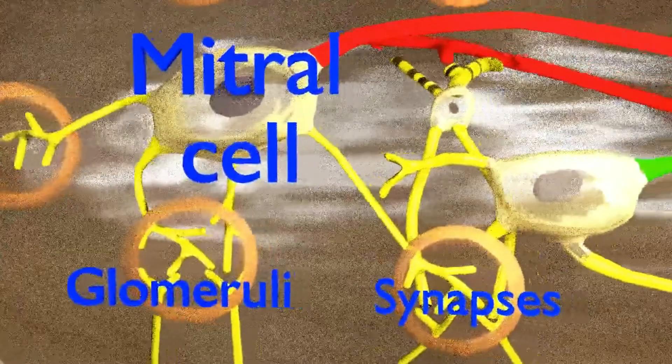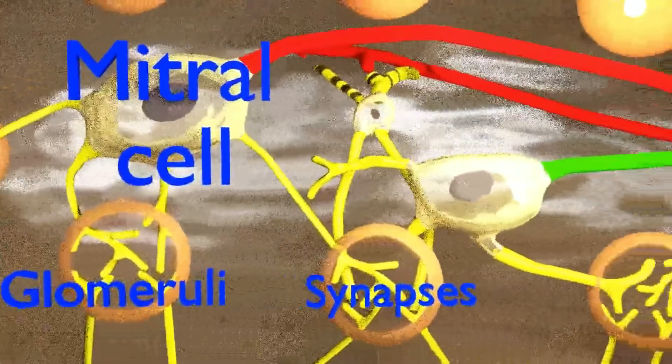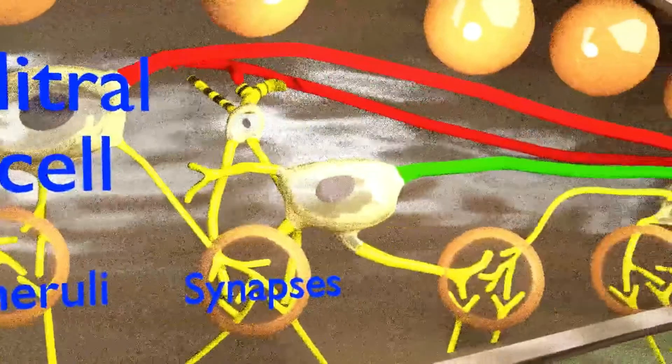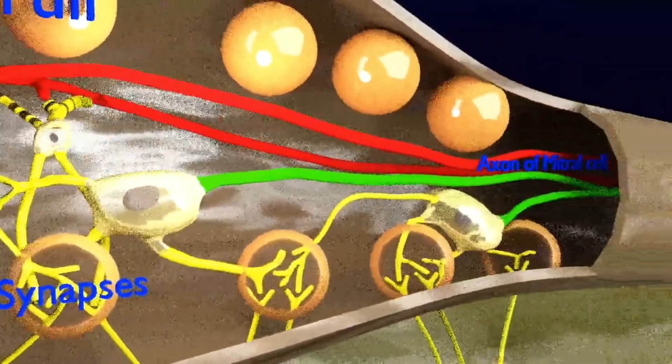The axons of the mitral and tufted cells form the olfactory tract which projects directly to the olfactory cortex.